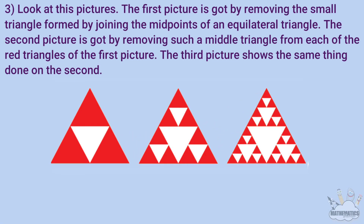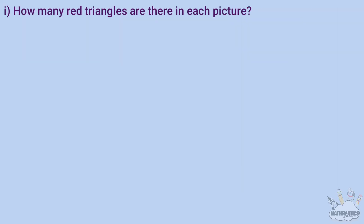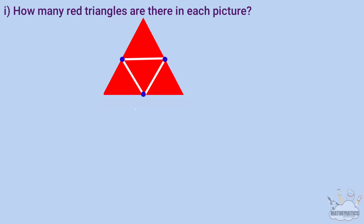Now look at these pictures. The first picture is obtained by removing the small triangle formed by joining the midpoints of an equilateral triangle. The second picture is obtained by removing such a middle triangle from each of the red triangles of the first picture. The third picture shows the same process applied to the second.